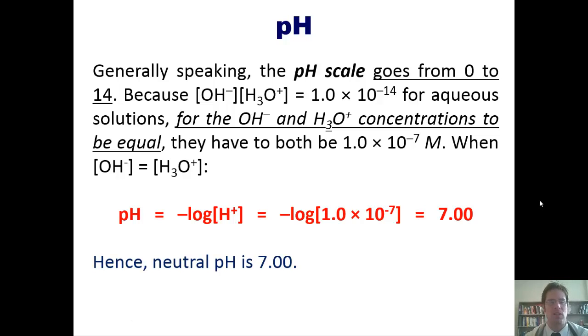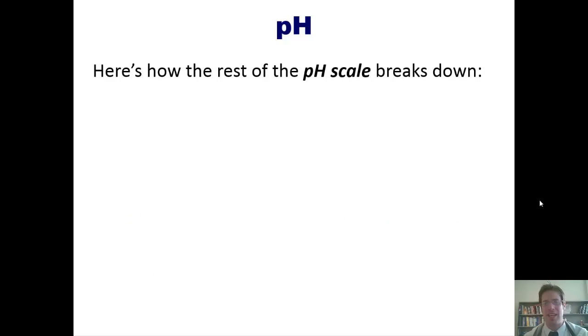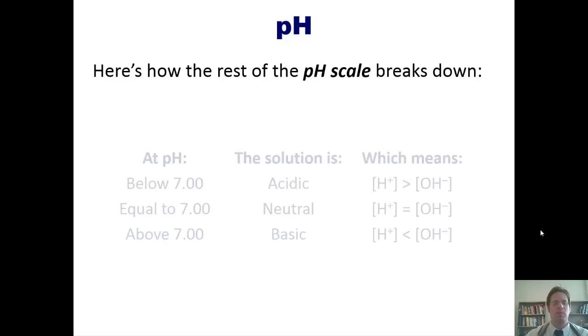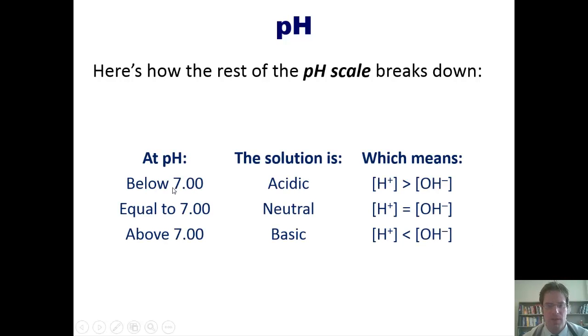Hence, neutral pH, the pH at which hydroxide concentration and hydronium concentration are the same, is equal to 7. Here's how the rest of the pH scale breaks down. If your pH is below 7, then your solution is acidic. In that scenario, the concentration of H+ or H3O+ is larger than the concentration of hydroxide. At pH 7, you're at neutral pH, where the concentrations of these two species are equal. Above 7, you're at basic pH, where the concentration of hydroxide is larger than the concentration of hydronium.